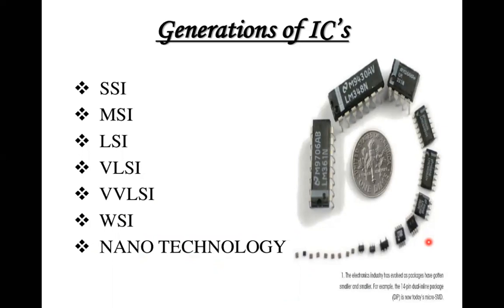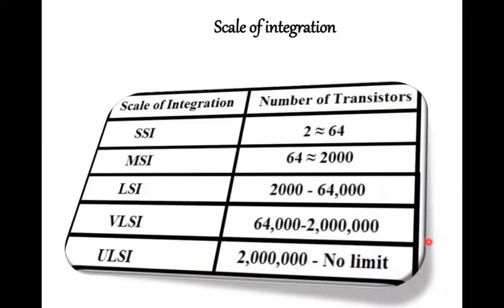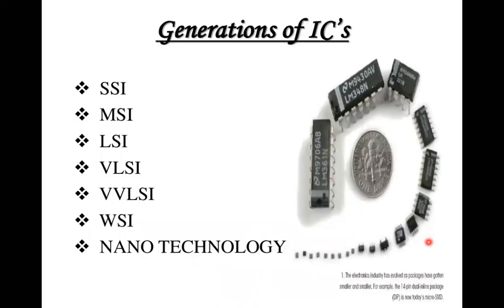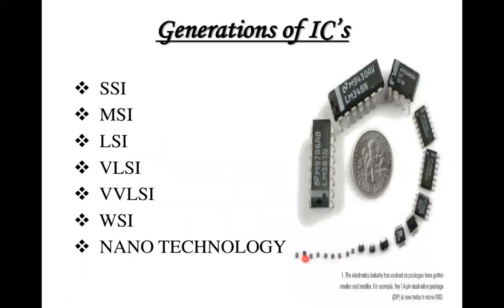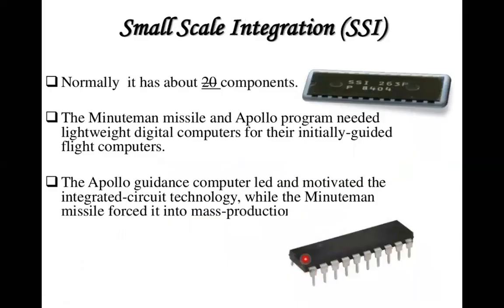The generations of ICs: SSI (Small Scale Integration) with 2 to 64 transistors; MSI (Medium Scale Integration) with 64 to approximately 2,000; LSI (Large Scale Integration) with 2,000 to 64,000; VLSI (Very Large Scale Integration) with 64,000 to 2 million (20 lakh) transistors; and ULSI (Ultra Large Scale Integration) with over 2 million transistors and no upper limit. The latest development is nanotechnology.